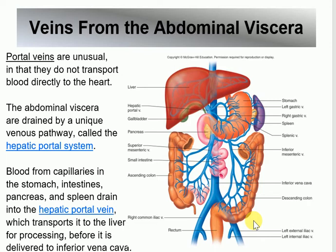...that takes blood with absorbed nutrients from the digestive tract and brings it to the liver, ending there. This is unique because normally veins return blood to the heart — any vein's final destination is the right atrium. But the hepatic portal vein has nothing to do with the heart directly. It just collects nutrient-rich blood and delivers it to the liver, where the liver takes care of it.